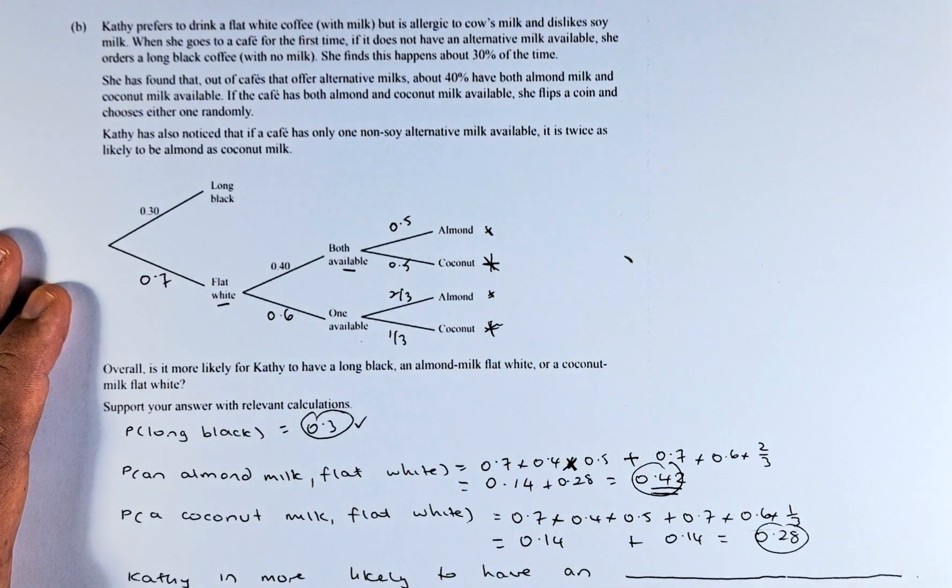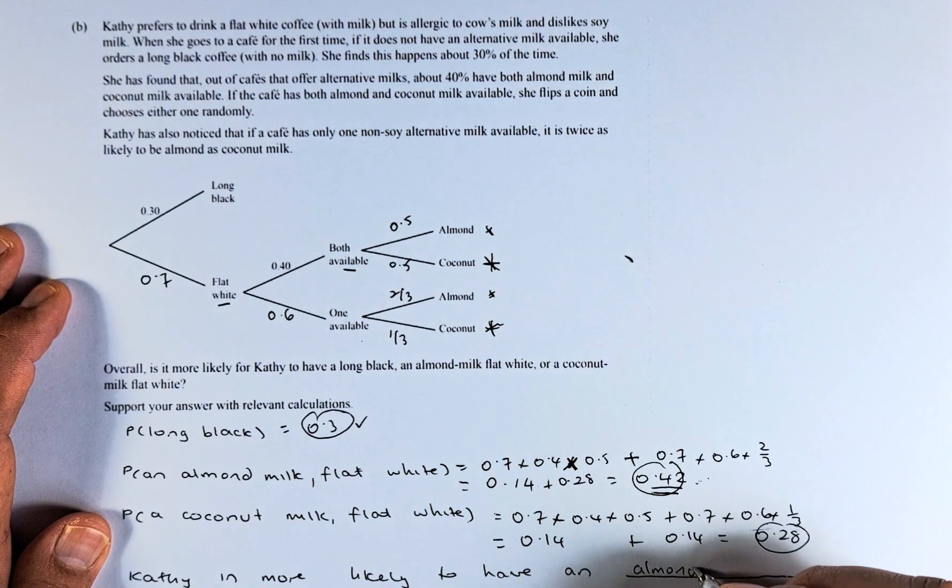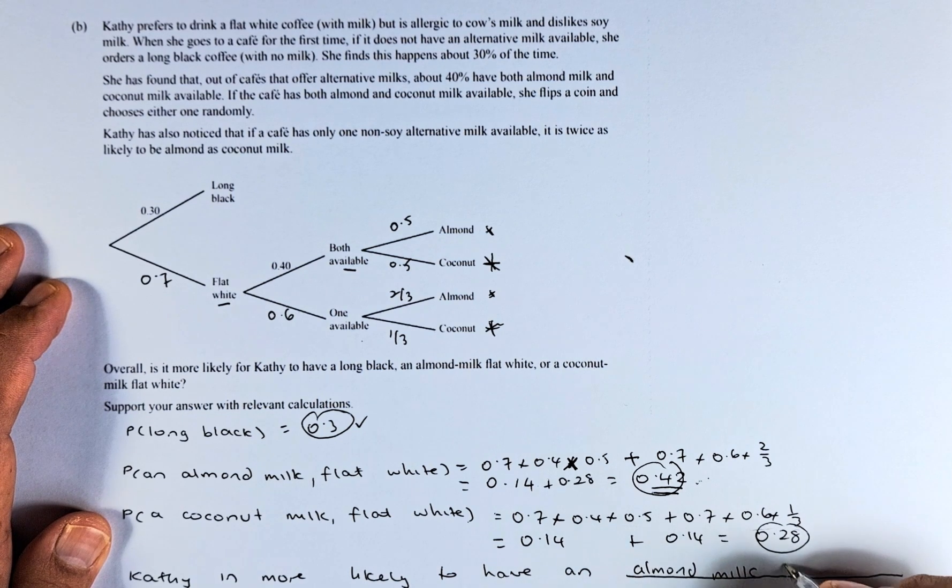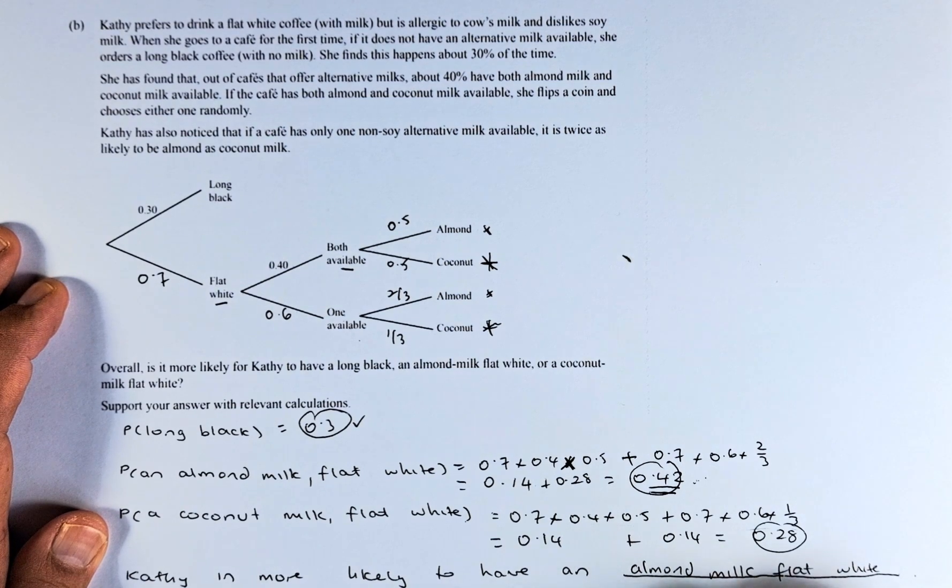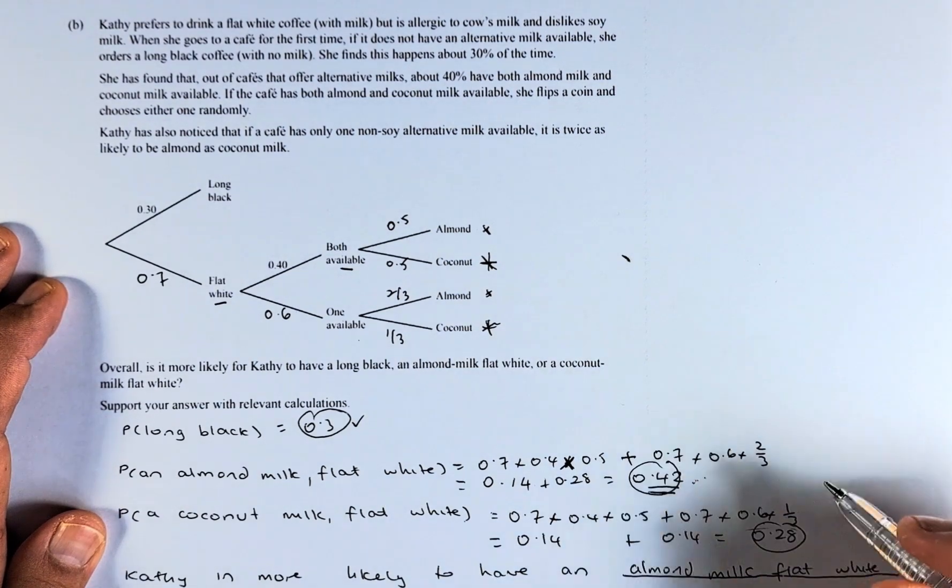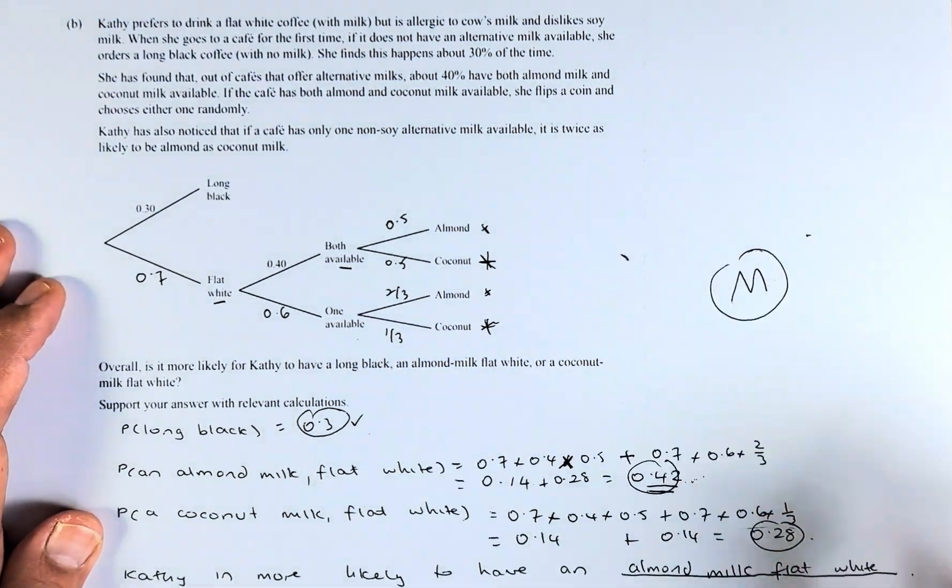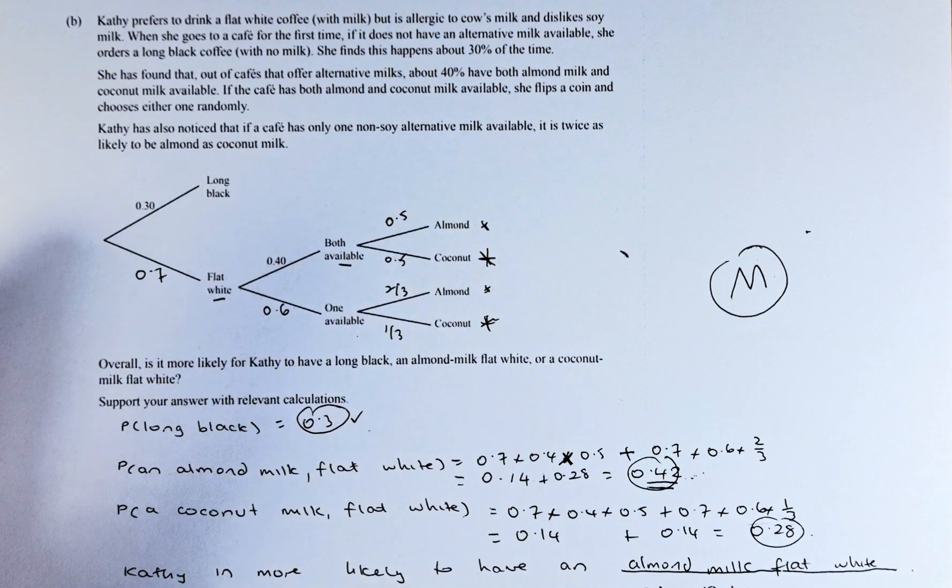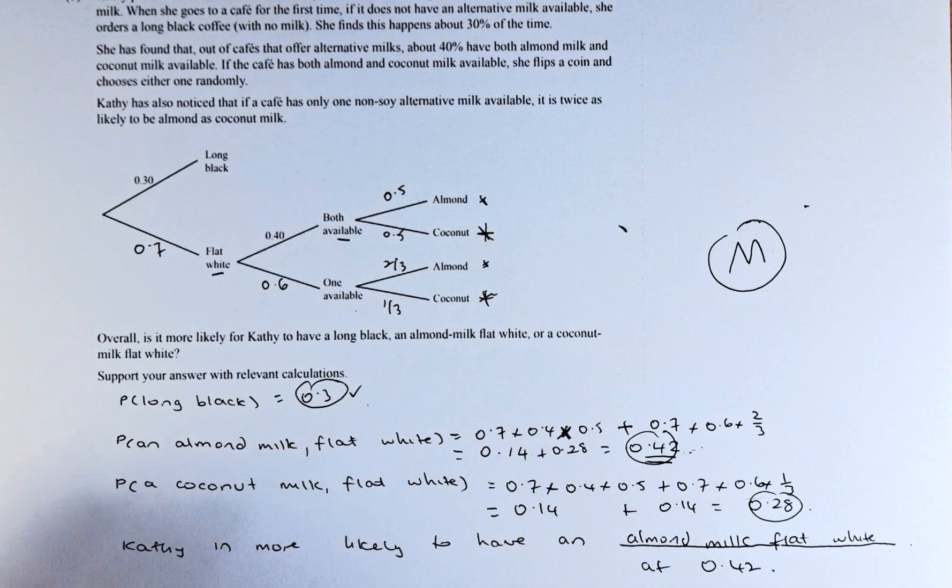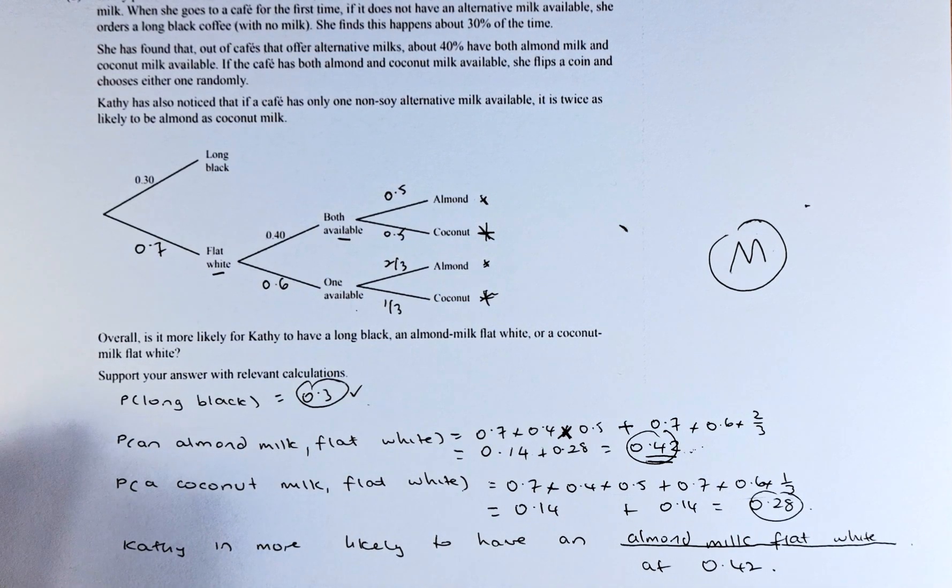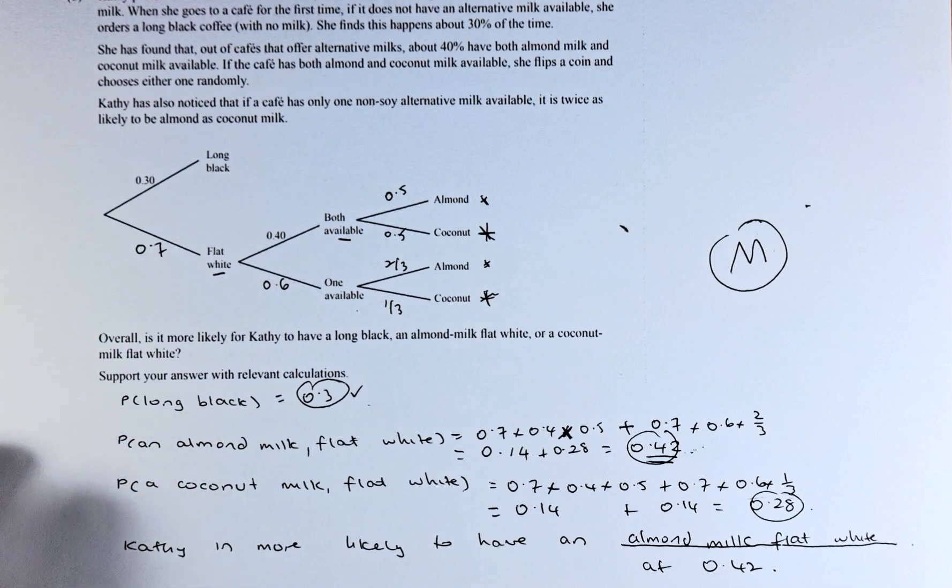So Cathy is more likely to have the one in the middle, which is almond milk flat white, with a probability of 0.42, which is higher than 0.28 and 0.3. If you can answer that, there is a merit in this question. Overall, you should be able to get excellent if you can do all the following questions. Have a good day, everyone. I will see you in the next question, which is question 3 of the paper. Cheers.